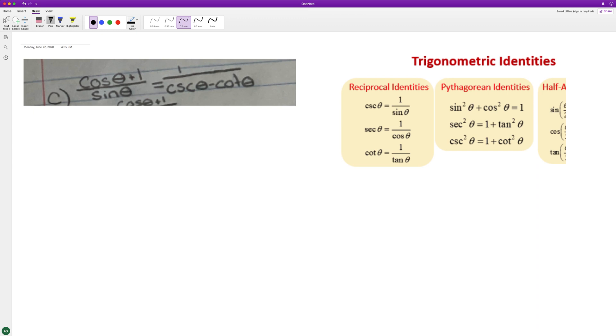by its conjugate, cosine theta minus 1. So we end up with cosine squared theta minus 1. We're multiplying cosine theta plus 1 times cosine theta minus 1, middle terms cancel out, and on the bottom we have sine theta times cosine theta minus 1.